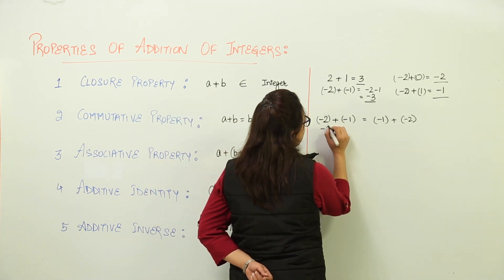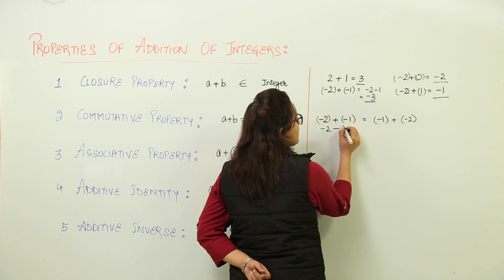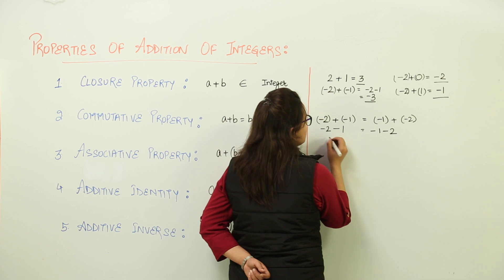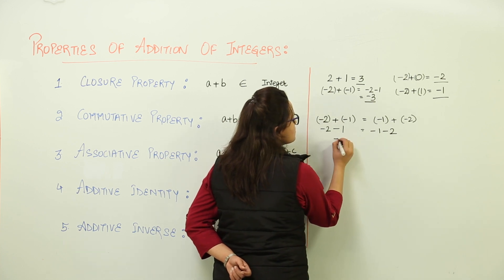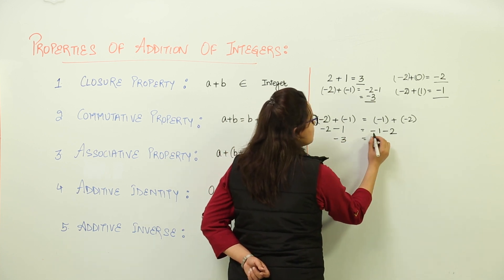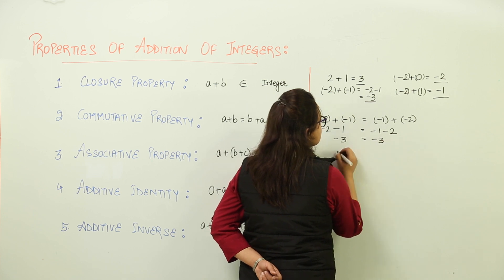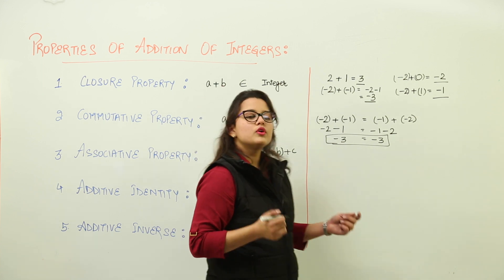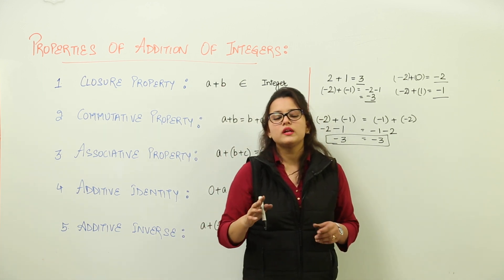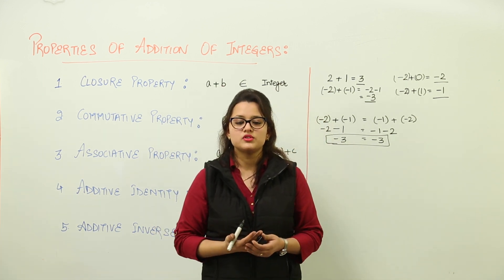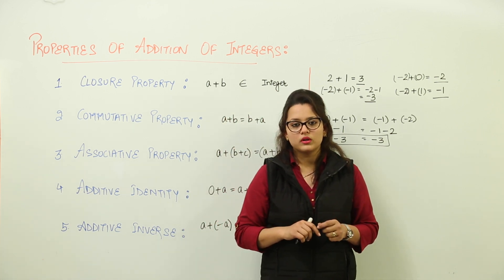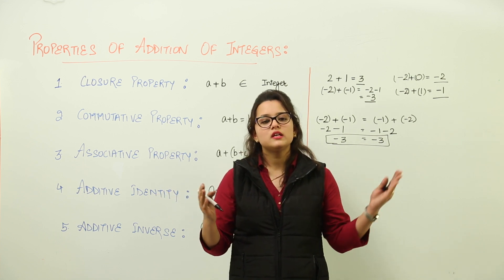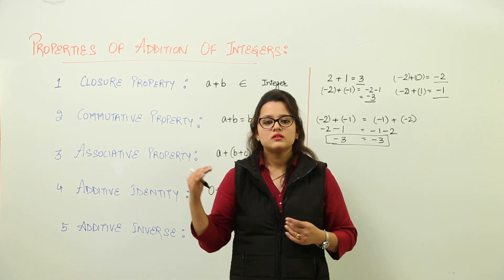Over here we get minus 2 plus minus 1, and here we get minus 1 plus minus 2. So minus 2 minus 1 is minus 3, and minus 1 minus 2 is also minus 3. That means this is coming out to be true. For any 2, 3, or 4 integers addition, the order of addition is not important.